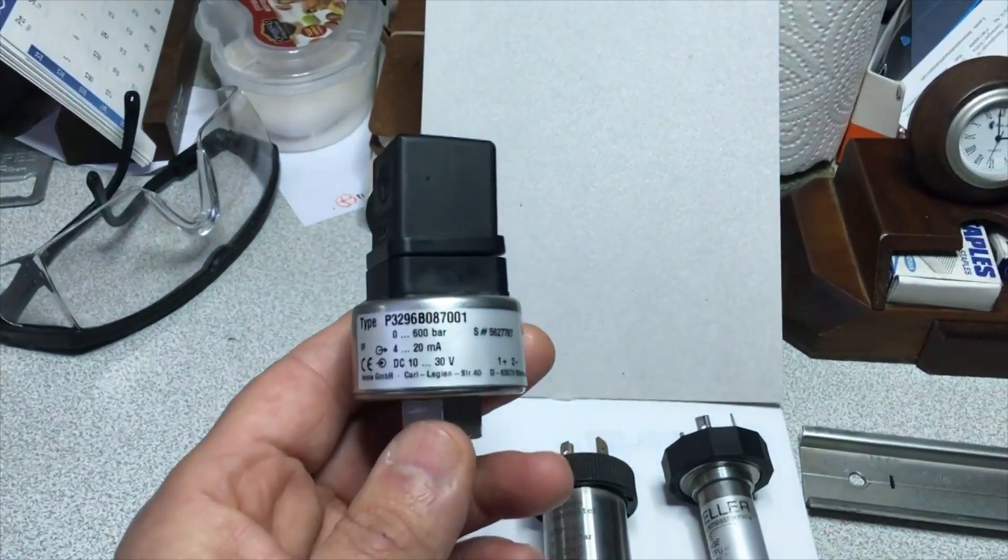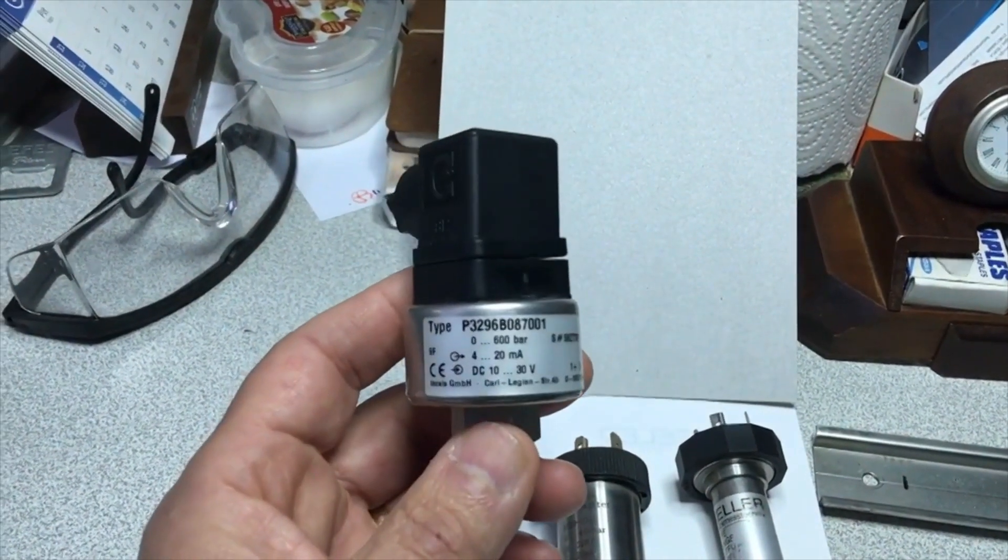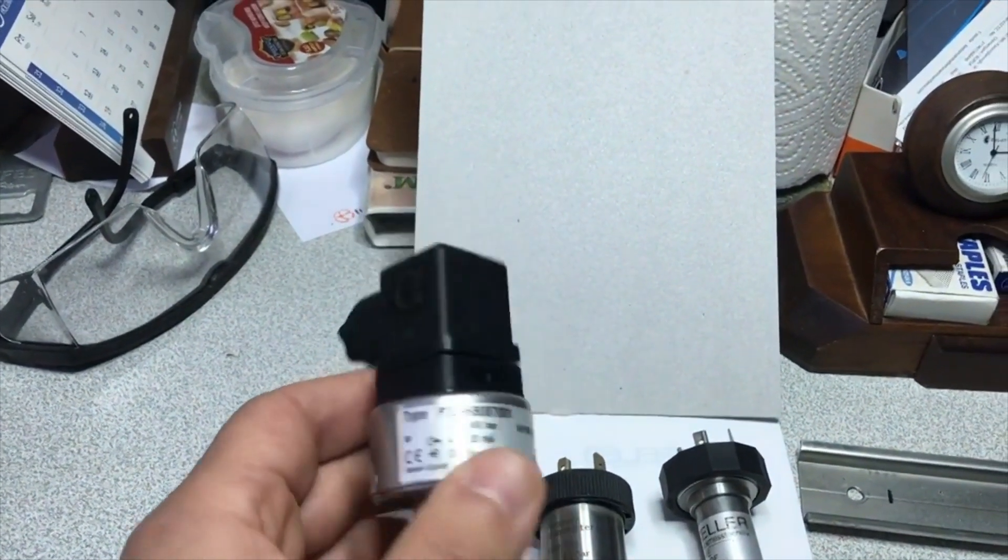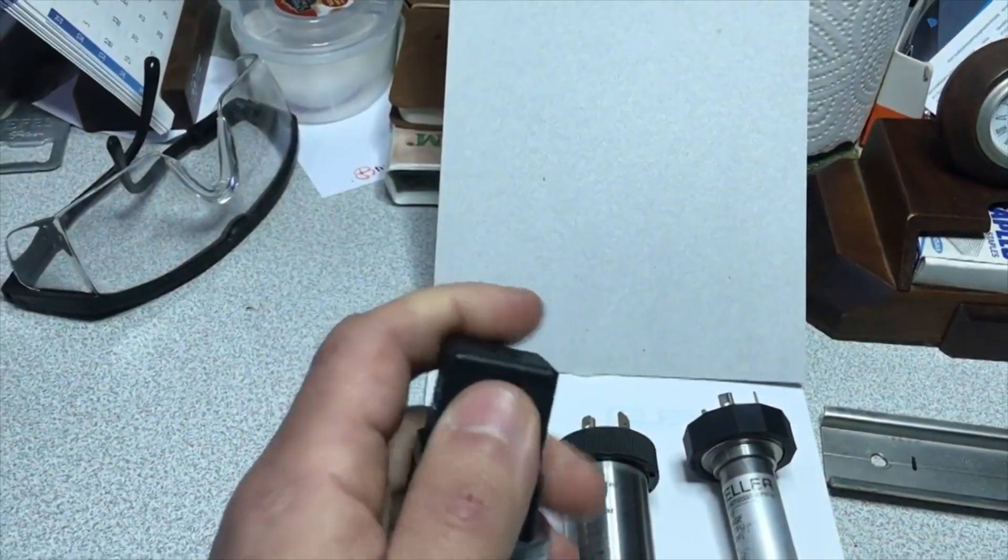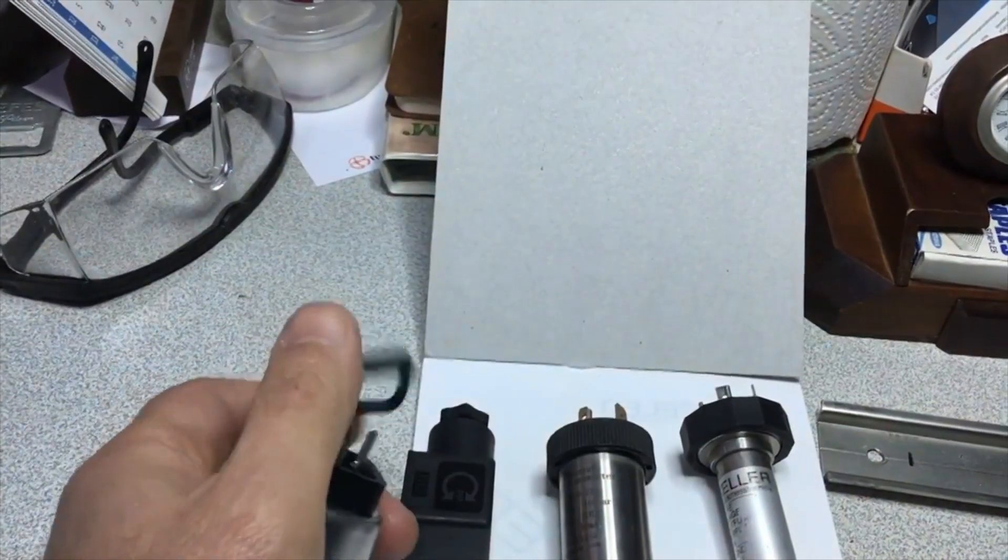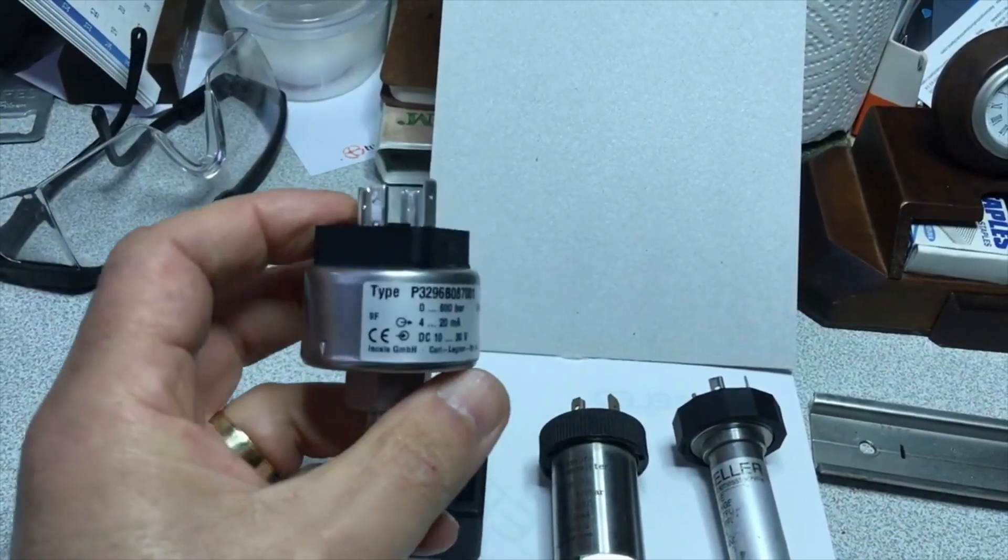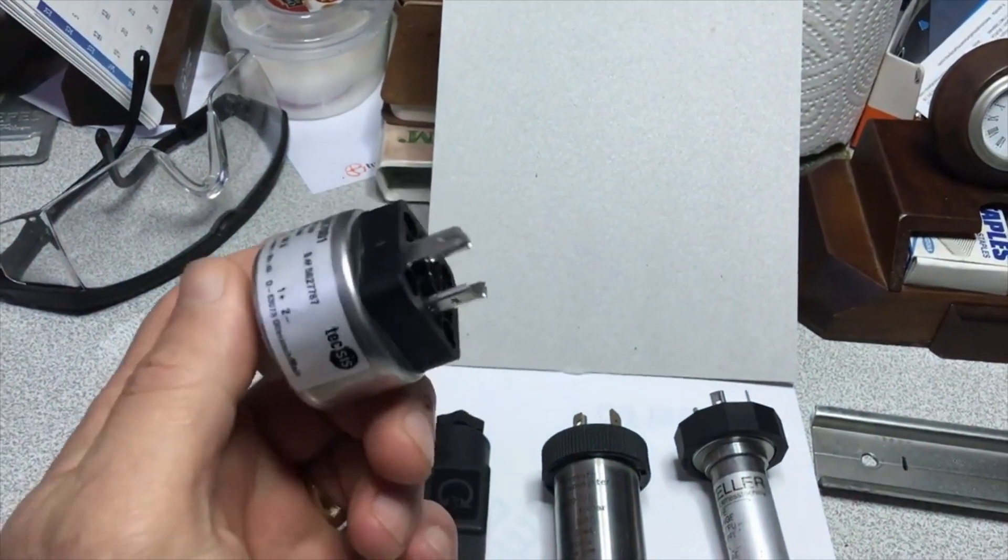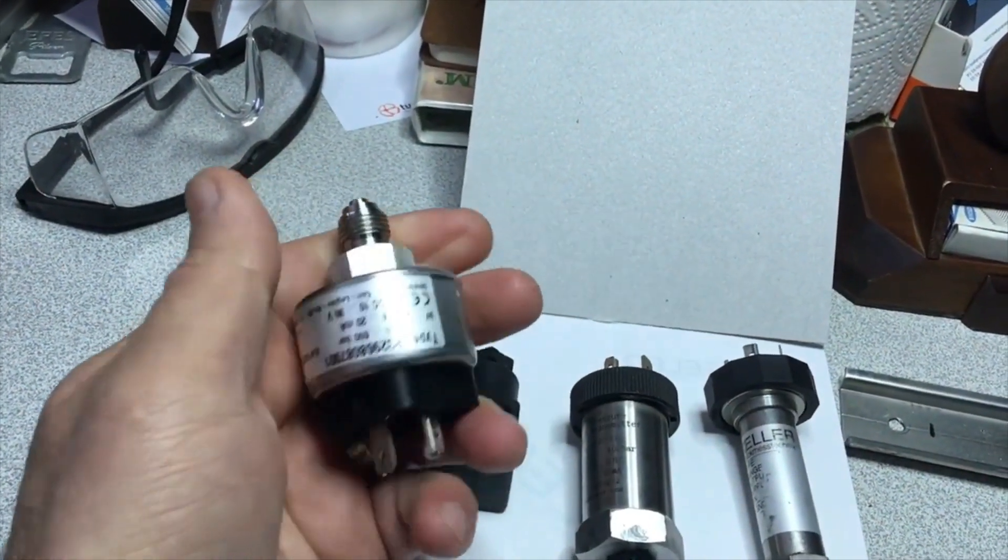The meaning of the output current is that when the pressure applied to our sensor is 0 bar, we will be able to output 4 milliamperes, and when the system pressure reaches 600 bars, the same sensors will give us 20 milliamps output. These sensors are also available with 0 to 10 volt output and 0 to 20 milliamp output.